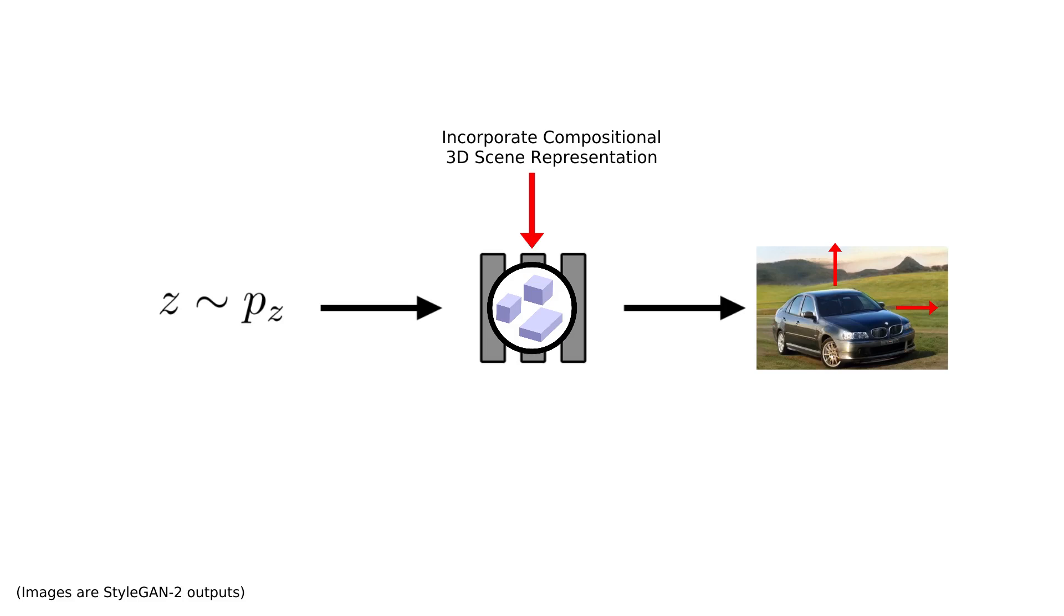For example, we can move individual objects around, we can rotate them, or we can change their appearance.